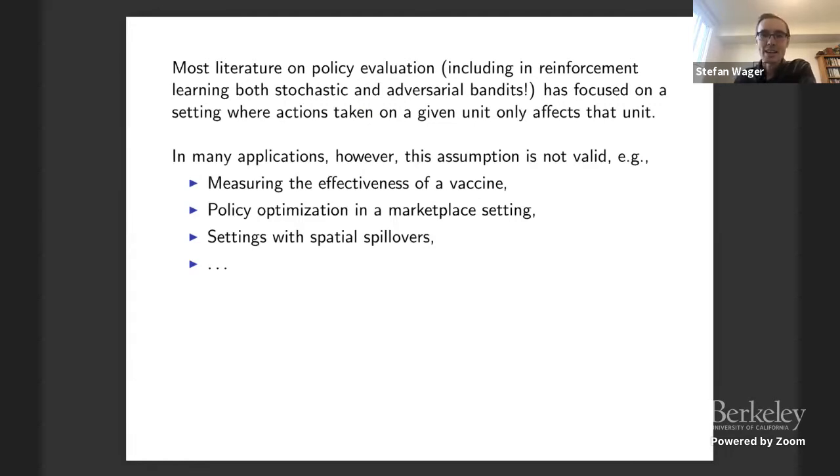Most literature on evaluating a policy, including in reinforcement learning, in bandits and causal inference and so forth, is focused on a setting where if you take an action on one unit, you affect that unit. If I give you surgery, I may help you survive. I'm probably not going to help your friend survive by giving you surgery. But in many applications, the assumption just isn't right. If you're thinking about vaccines, if your friend gets a COVID vaccine, that's totally going to help you not get COVID also.